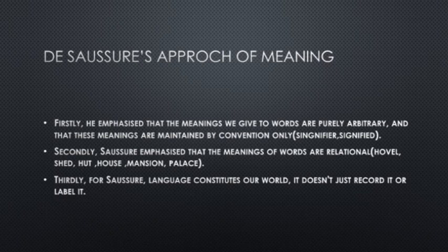In other words, we can understand the meaning of a word because it is different from other words. For example, there are words like hovel, shack, hut, house, mansion, palace — these are all signs related to dwelling, but we understand that each is different from the others. The meaning of words is relational; they are not defined in isolation but through their differences from related terms.